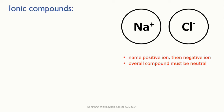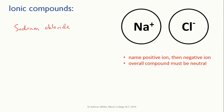To name these compounds, the positive ion is always named first and then the negative ion. Let's look at table salt. This is sodium chloride — it's made of the elements sodium and chlorine. We name the positive ion first; in this case it's sodium, and then we name the negative ion next. We see that the element is chlorine, but for a negative monatomic ion, the end of the name is changed to "-ide". So instead of chlorine, we have chloride.